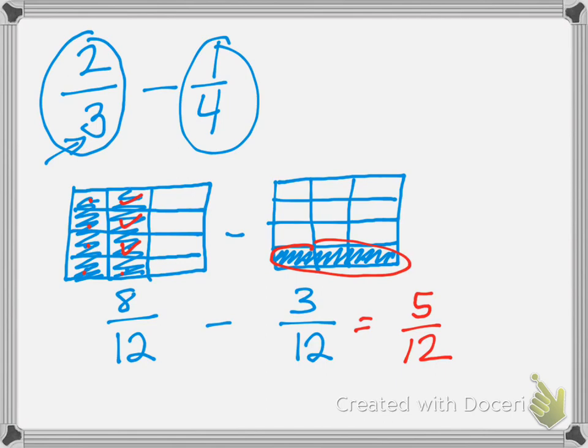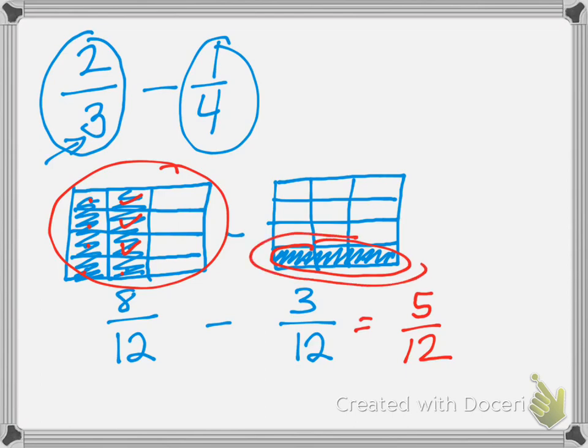So to summarize: we draw the first fraction, we draw the second fraction, and then we give each rectangle the other rectangle's lines. Then we mark off in our first rectangle — we take away however many were in the second. We can also check our work by looking at the arithmetic.